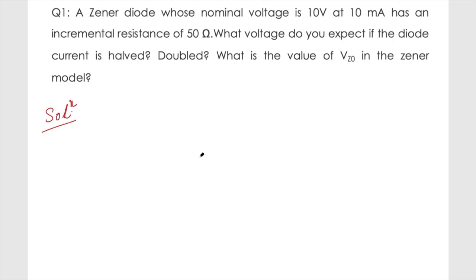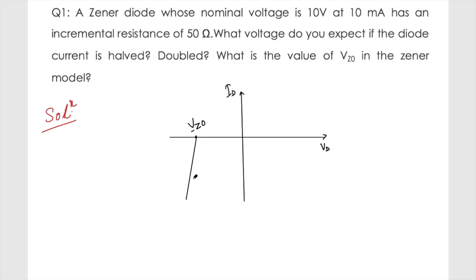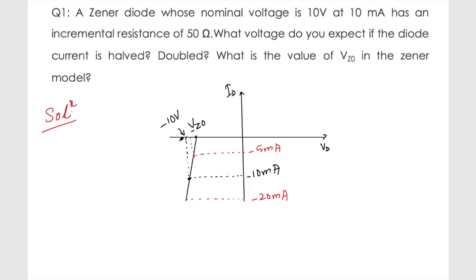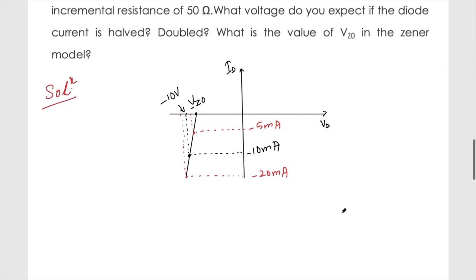Looking at the I-V characteristics of the general diode, we have vz0 on the voltage axis. At a current of minus 10 milliampere, the voltage is minus 10 volts. We need to find what happens to the voltage when the current is half, that is minus 5 milliampere, and when it is doubled to minus 20 milliampere. We use the vz notation rather than the negative sign convention.